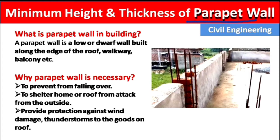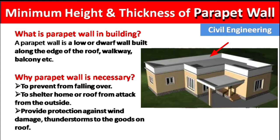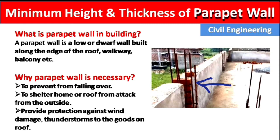A parapet wall is a low or dwarf wall built along the edge of the roof, walkway, balcony, etc. Parapet walls are generally constructed above the building and at the edge of the roof. As you can see, this is a parapet wall constructed at the edge — it is at the side of the roof.